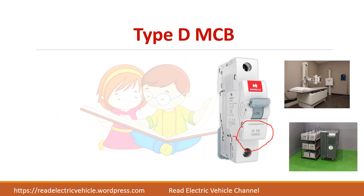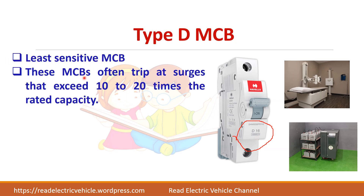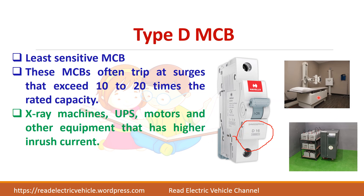Next we have type D breaker. This type is the least sensitive one because it will trip only when the current is between 10 to 20 times the rated current. It is usually preferred in heavy machines like X-ray machines, UPS, and motors where the inrush current is very high. If a type B breaker were used here, it would lead to nuisance tripping, so type D MCB is used to avoid that.